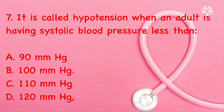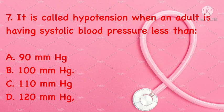It is called hypotension when an adult has a systolic blood pressure less than: 90 mmHg, 100 mmHg, 110 mmHg, or 120 mmHg. Correct answer is A: 90 mmHg.